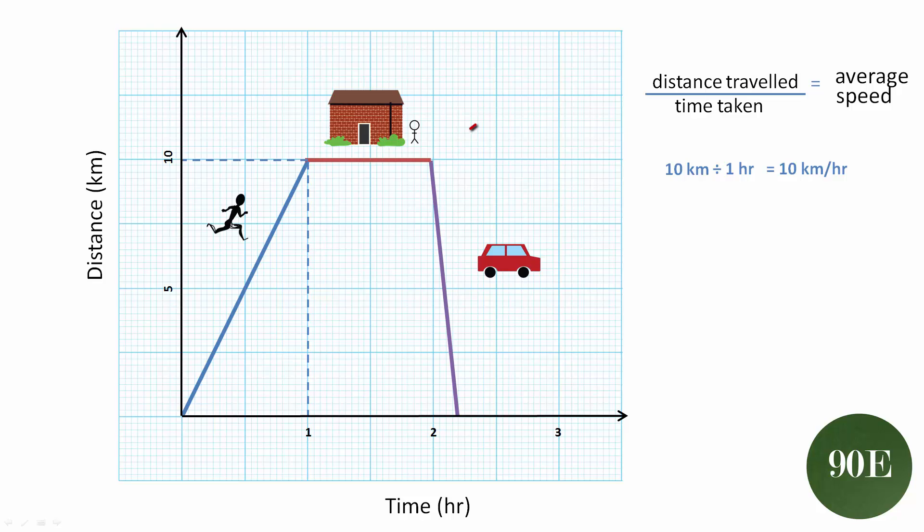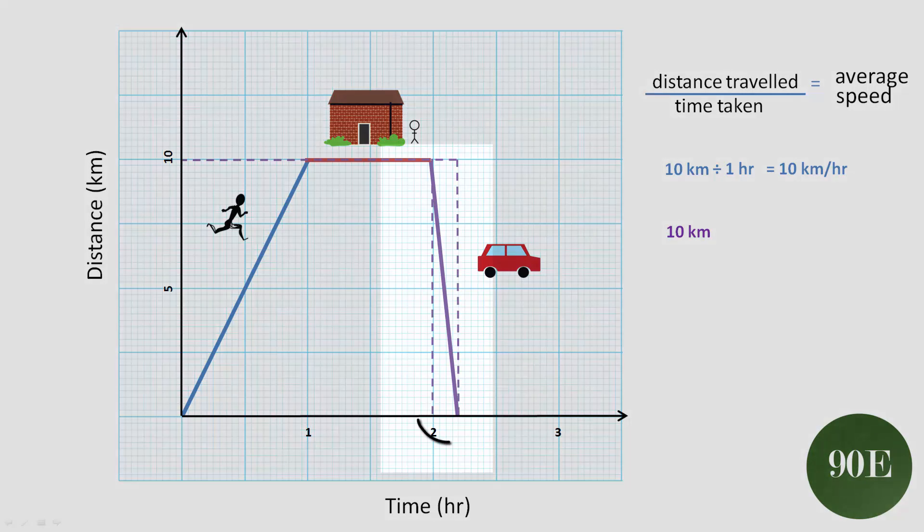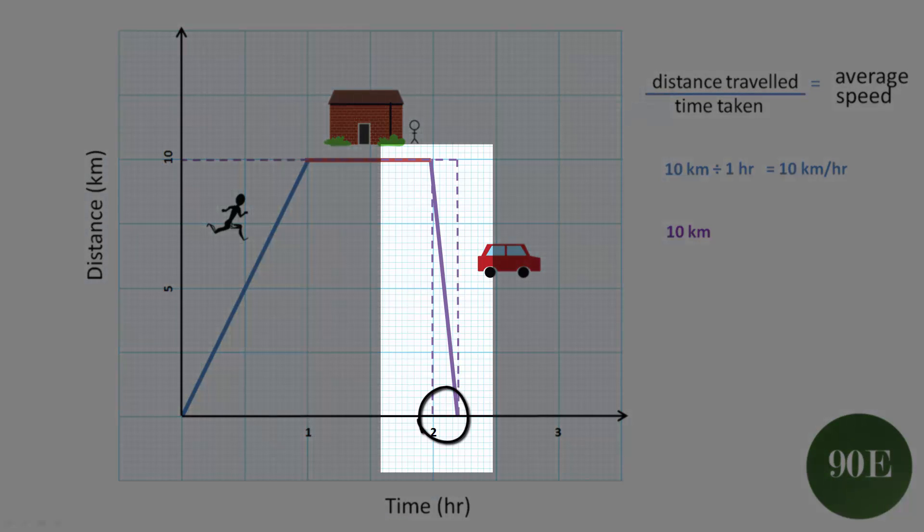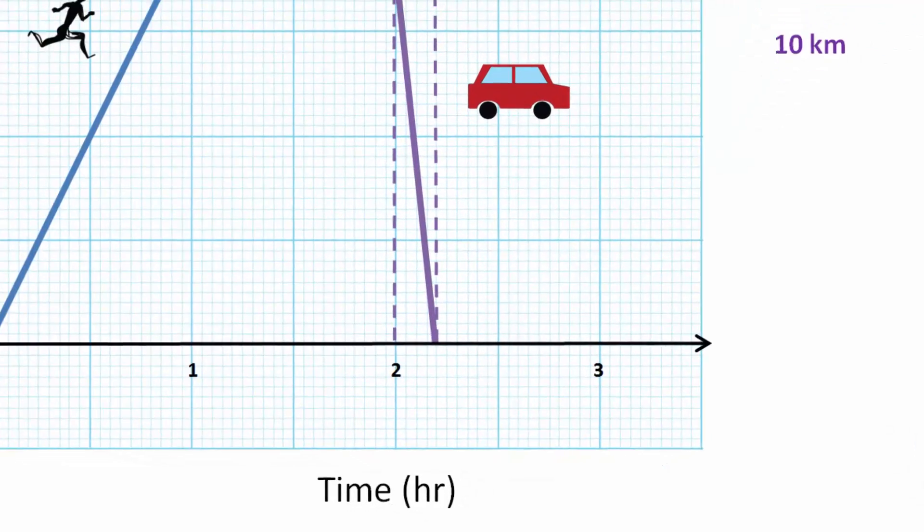Next, we know that they stayed at their friend's house because the line is horizontal. Let's now calculate the return journey home. We need to know the distance that was traveled once more, which is 10 kilometers, and we need to know the time that it took to travel those 10 kilometers. This is slightly different to all the other calculations we've done so far. We need to draw two lines from the beginning of the journey to the end of the journey to check where they meet the x-axis. This allows us to look at what the difference or change in time has been.